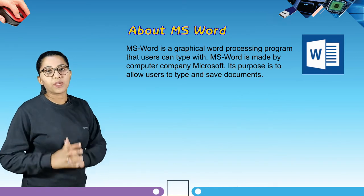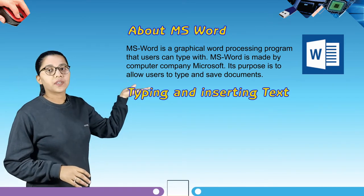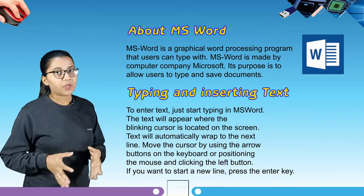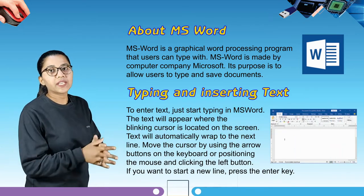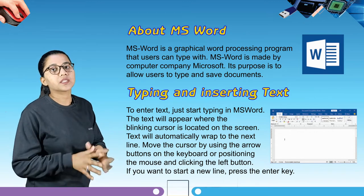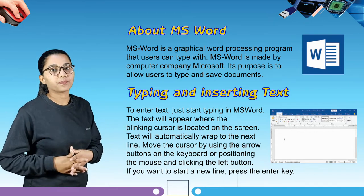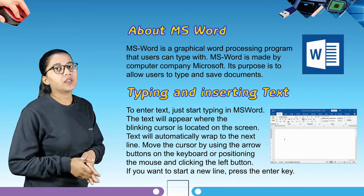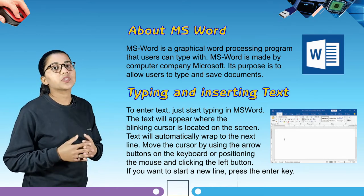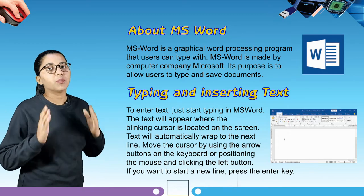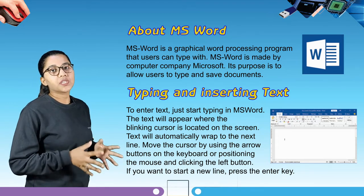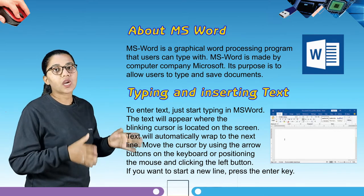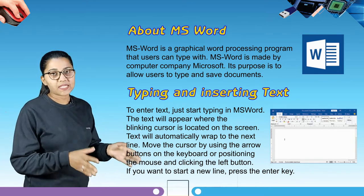Our next topic is typing and inserting text. To enter text, just start typing in MS Word. The text will appear where the blinking cursor is located on the screen. Text will automatically wrap to the next line. Move the cursor by using the arrow buttons on the keyboard or by positioning the mouse and clicking the left button. If you want to start a new line, press the Enter key.